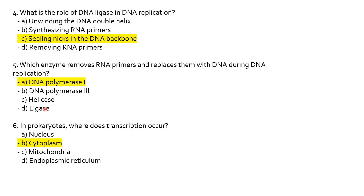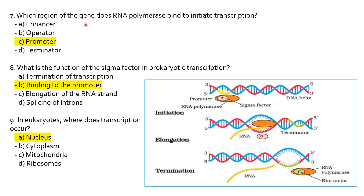In prokaryotes, where does transcription occur? Transcription occurs in the cytoplasm. In eukaryotes, it occurs in the nucleus. Which region of the gene does RNA polymerase bind to in order to initiate transcription? The promoter is the region where RNA polymerase binds. The sigma factor binds to the promoter to initiate transcription — its role is in initiation.